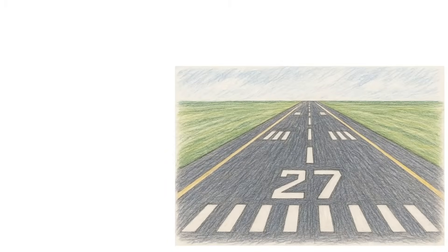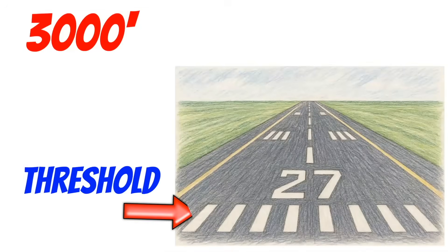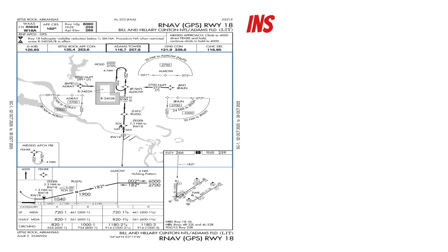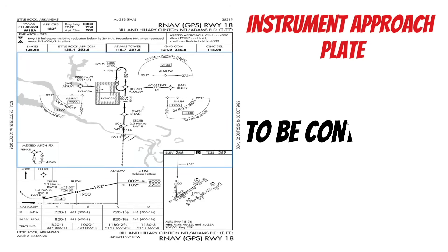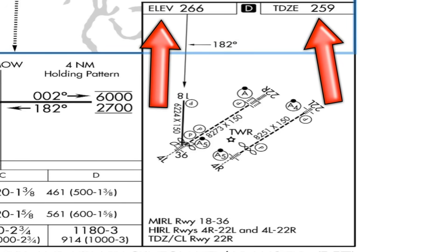The touchdown zone elevation is simply the highest point within the first 3,000 feet of a runway. This measurement typically begins at the threshold, or what I like to call the piano keys. Another place you can find this is on an instrument approach plate. When you start working on instrument stuff, you might have one of these in front of you in addition to the airport diagram, and these have a mini airport diagram down in the corner of the plate. You can get the field elevation and also the touchdown zone elevation for the specific runway that you're going to be using.